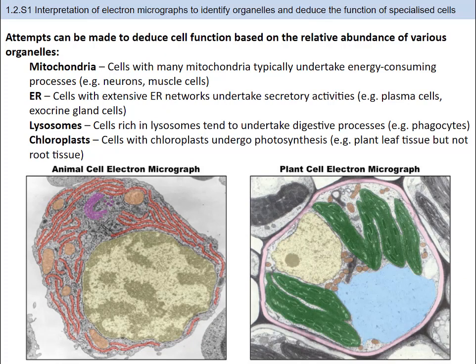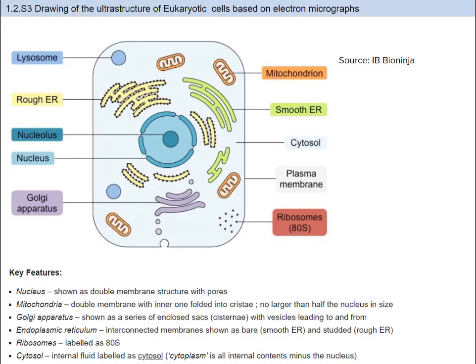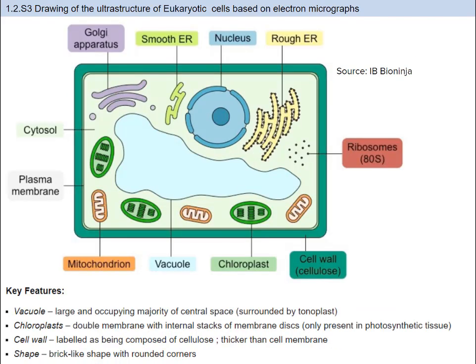Here are some more electron micrographs. Just like with prokaryotic cells, you need to pick out key organelles and deduce potential cell types based on the number of organelles present. For example: cells with many mitochondria undertake energy-consuming processes like neurons and muscle cells; cells with extensive ER networks undertake secretory activities like exocrine gland cells; cells rich in lysosomes tend to undertake digestive processes like phagocytes; and cells with chloroplasts undergo photosynthesis. It's like playing detective — read the micrograph for clues and apply your knowledge. You also need to be able to draw and label both animal and plant eukaryotic cells based on a micrograph, accurately sketching key features. Use pencils and colored pencils for best outcomes.